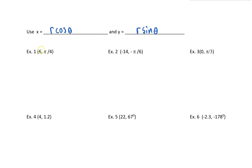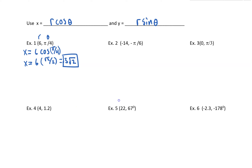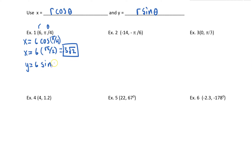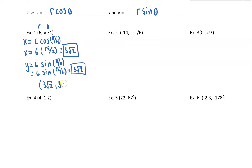For the first example, R is 6 and theta is π/4. So X equals 6 cosine(π/4). Cosine at π/4 is √2/2, so our X value is 3√2. For Y, it's 6 sine(π/4), which is also √2/2, giving Y = 3√2 as well. So the answer is (3√2, 3√2).